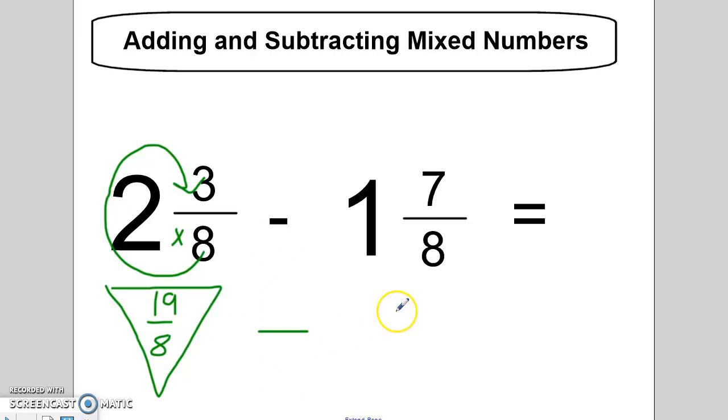And this is a subtraction problem. I'm going to do the same thing over here. I'm going to turn this mixed number into an improper fraction. Eight times one is eight plus seven is 15. So one and seven eighths is now 15 eighths. And I put my equal sign here.